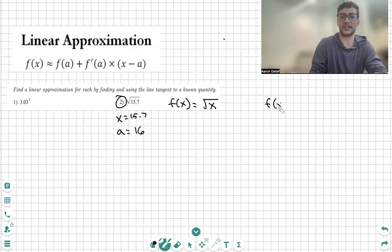So f(x) is square root of x. When I do f(a), which is 16... f(16) is square root of 16, which equals 4. So f(a) equals f(16) equals 4.